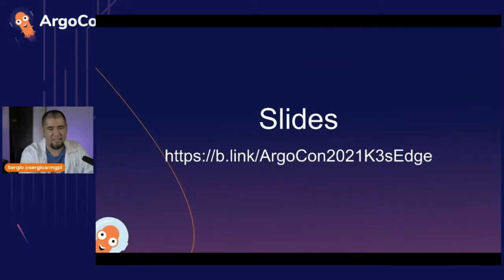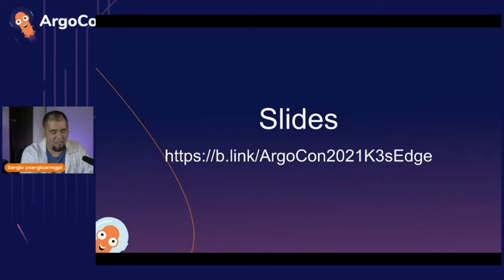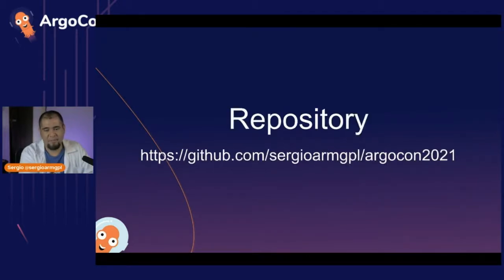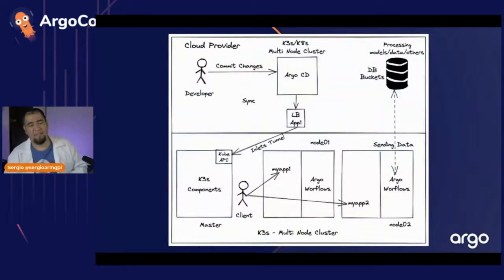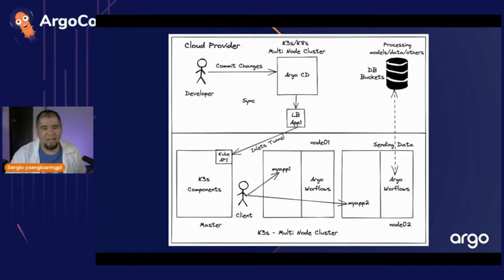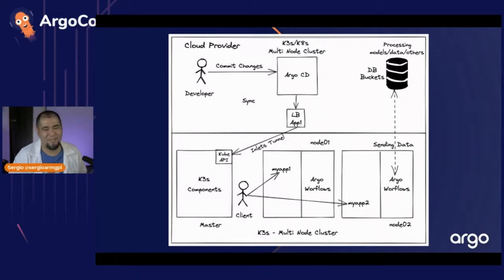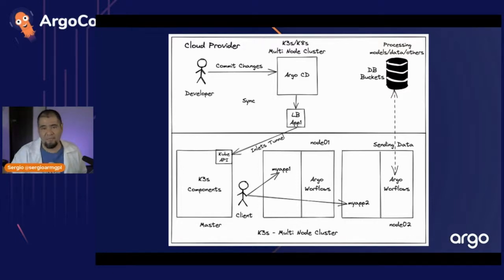Let's move to the demonstration. Here's the link for the slides and the repository I'm using. This is the diagram for my demo. I have a local cluster using K3S running near me right now. I'm using two nodes — node 01 and node 02 — running K3S.